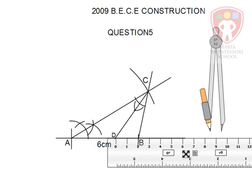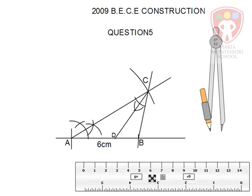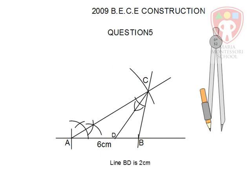Then we proceed to measure the second part, which is BD or DB. And we get BD is equal to two centimeters.